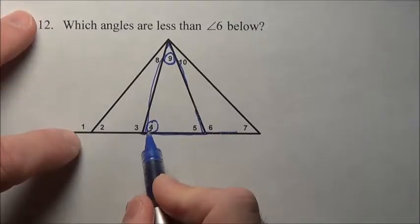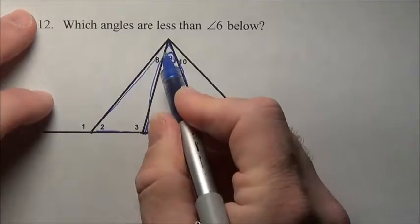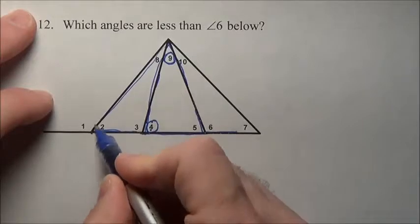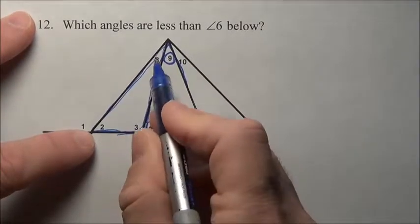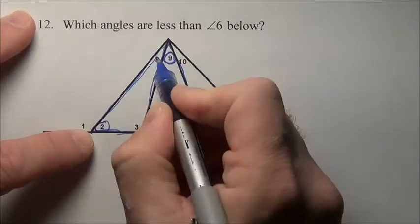Now notice 4 is an exterior angle to this triangle right here that has 2, 8, and 3 in it. That means 4 is equal to 2 and 8, meaning 4 is bigger than each of them individually.